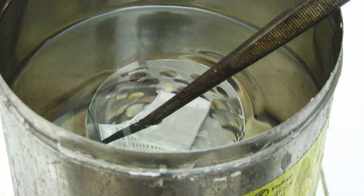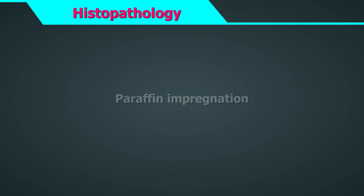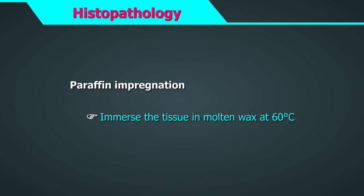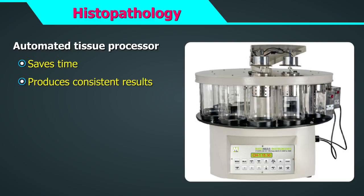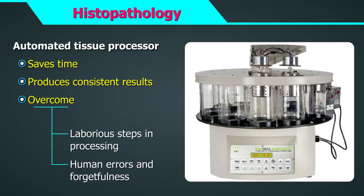Multiple changes of xylene may be required to clear the ethanol. The tissue is then immersed in molten wax at 60 degrees centigrade in a step called paraffin impregnation. In a large pathology laboratory, much of this tissue processing is automated to save time and produce consistent results. Automation overcomes laborious steps and reduces human errors and forgetfulness. However, the tissue processor should be maintained well. Processes for start-up and shutdown and details of solution change should be standardized, with work desk displays available.